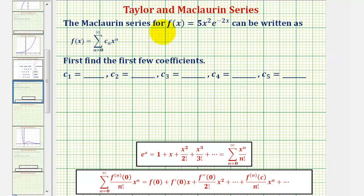We want to find the Maclaurin series for f(x) = 5x² times e to the power of negative 2x, which we're given can be written in this form here, and then find the first few coefficients c sub 1 through c sub 5.